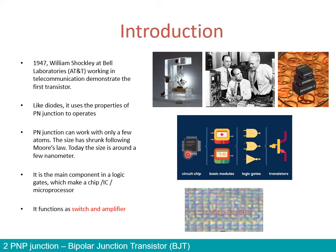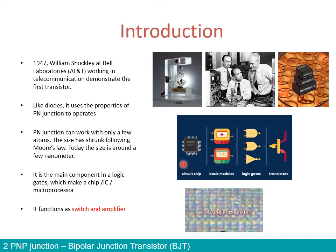what makes a circuit chip is basic modules, which are themselves made of logic gates. These logic gates are constructed by a combination of a few transistors. Basically, a transistor is the main component that makes a logic circuit or logic gates work. So that's what makes our chip, our integrated circuit or our microprocessors.